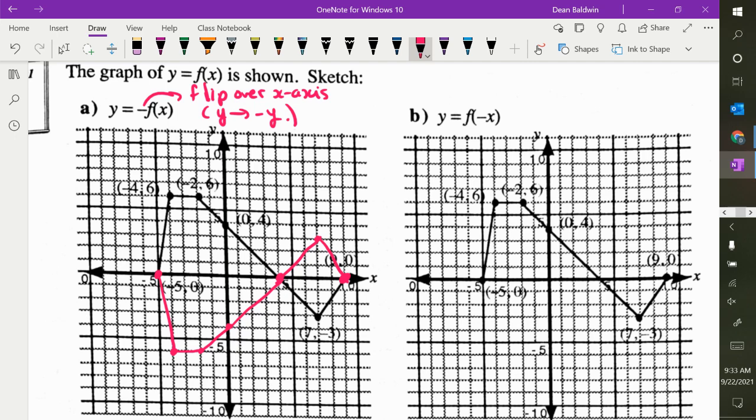Next one. Y is equal to f of negative x. What does that mean? Flip over the y. What do we change? X goes to negative x. What point doesn't change? Y intercepts. So this point right here stays the same. Everything else, the y stays the same, and you just change the x's.